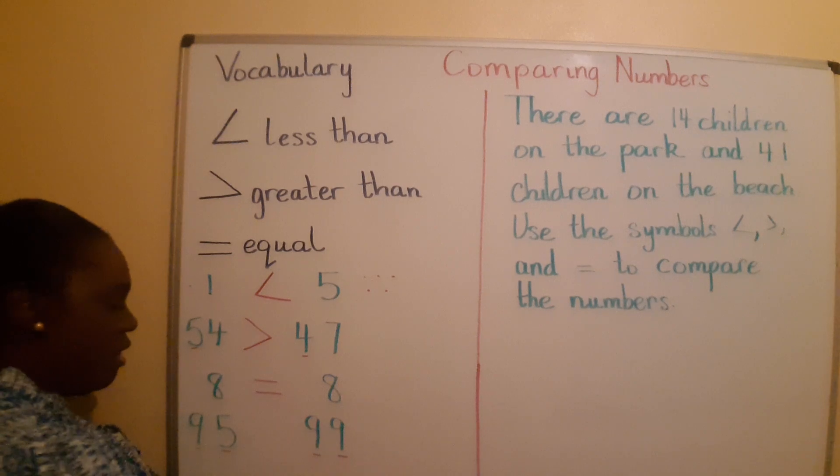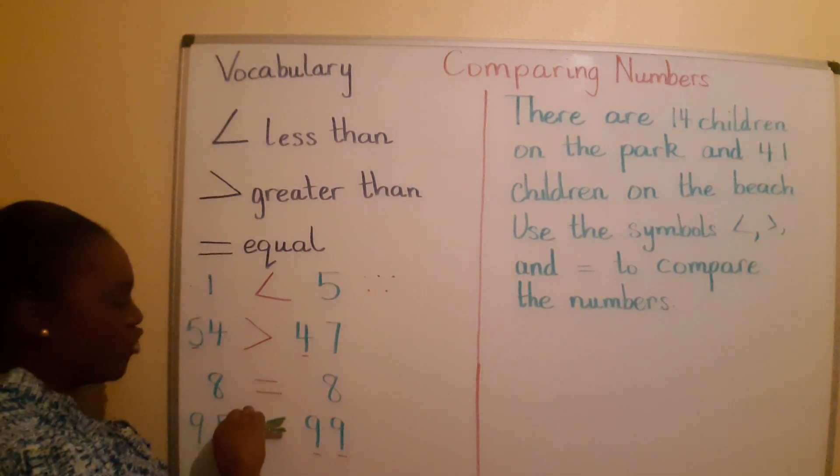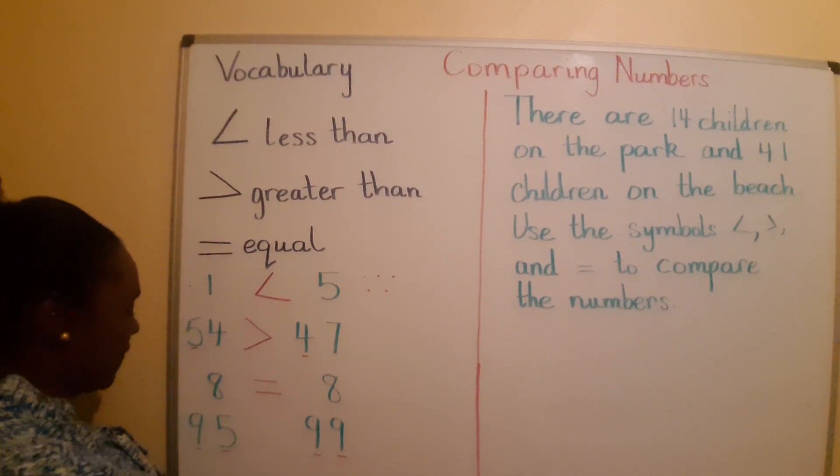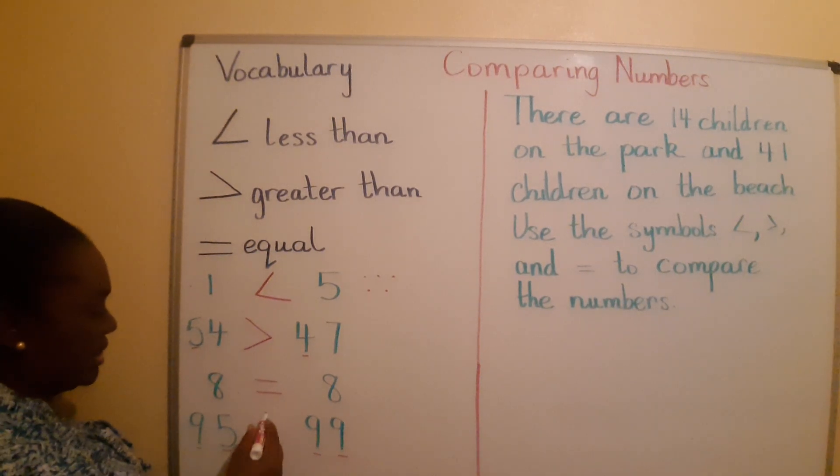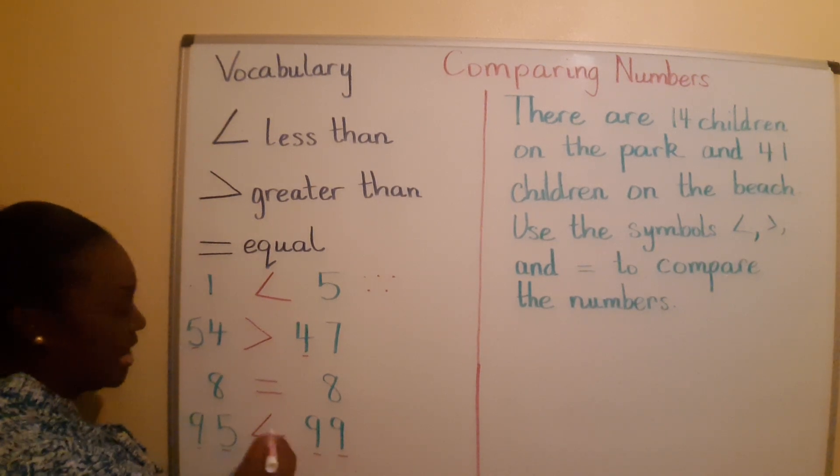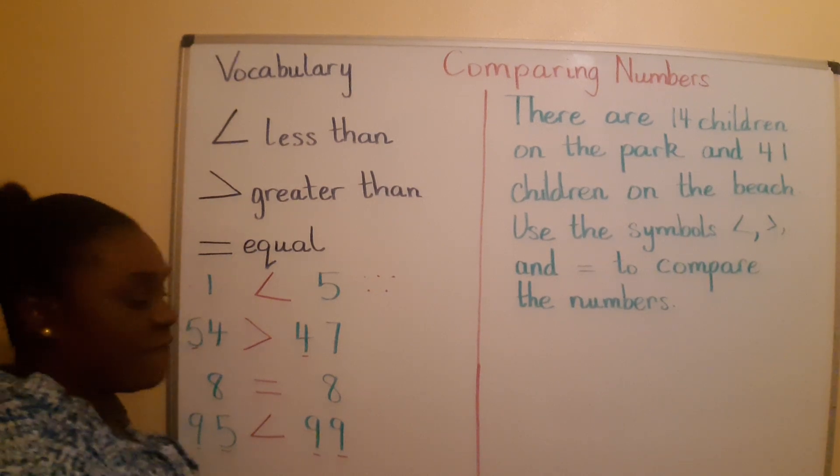Therefore, 99 is greater than 95. So, we can say 95 is less than 99. Very good.